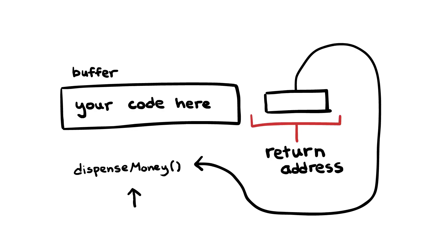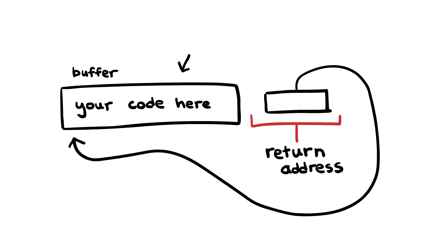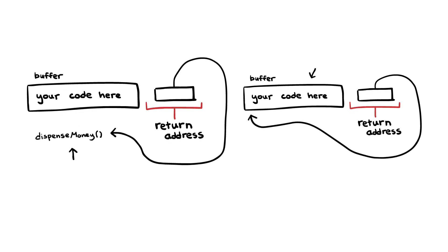In the first case, we controlled what code was executed by tricking the computer into running a function that we wanted. And in the second case, we controlled what code was executed by writing it ourselves. Either way, controlling code execution is the holy grail of buffer overflows, because it means that with that computer, you can do whatever you want.